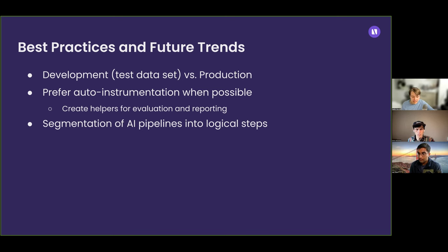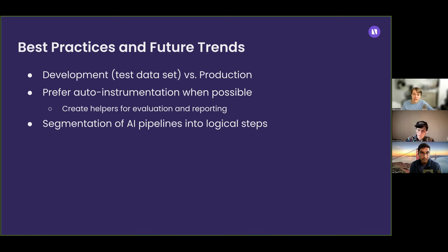With a RAG pipeline, segmenting your AI workload into different logical steps is always better from an observability perspective because you have data for those different steps that you can then aggregate and understand better. If you have everything happening as one span, there's not much you can dig into. You'd rather have it be granular and understand which step took the most time, or understand the responses and attributes for each step rather than seeing it as a whole.